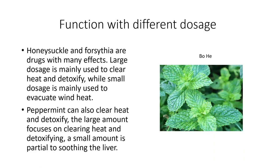Jin Yinhua and Lianqiao in large dosage are mainly for clearing heat and detoxification; in small dosage they mainly disperse wind-heat. In Yinqiao San, their main function is to disperse wind-heat, with a certain function of clearing heat and detoxification. Bo He in large amount, similar to Jin Yinhua and Lianqiao, can clear heat and detoxify. In small amount, it can soothe the liver and clear liver heat — for example, Xiao Yao San uses a little amount of Bo He to soothe the liver and clear liver heat.